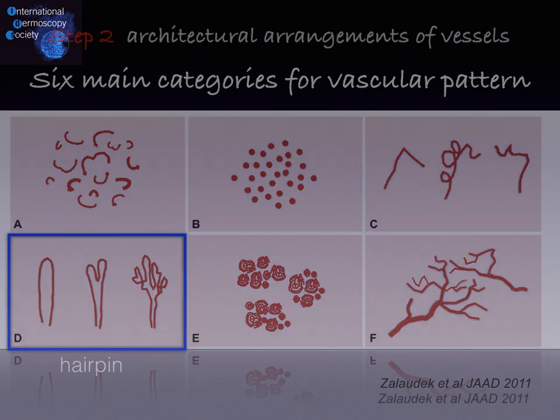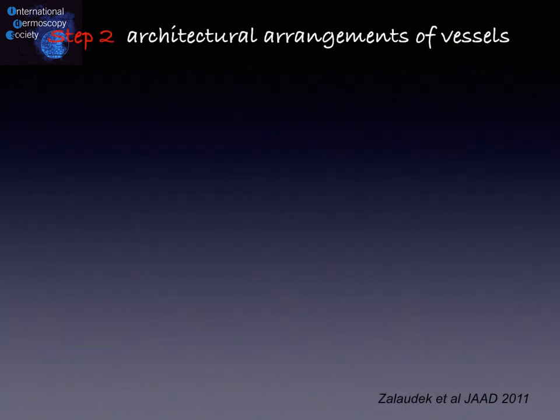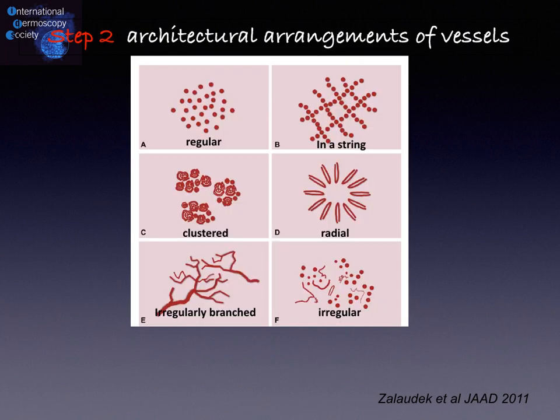Vessels are really important in terms of morphology, but the second step is to look at the architectural arrangement of vessels, which can be arranged as regular, in a string, clustered, radial, irregular, branched, or irregular.